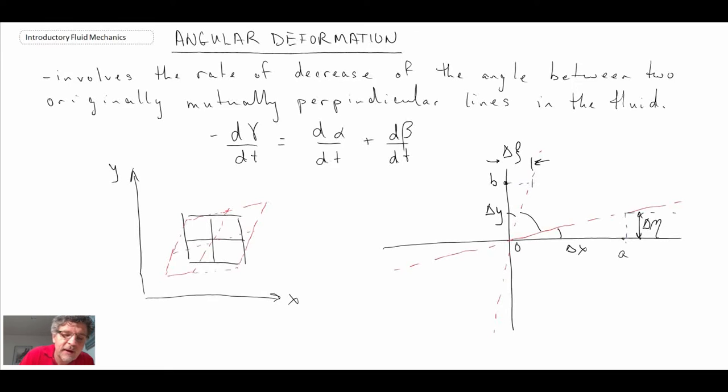In the equation that I wrote up here, we had an alpha, a beta, and a gamma. The gamma is this angle here. Alpha, I'm going to draw it as being delta alpha, and then beta will be delta beta in here. And what we're going to do...